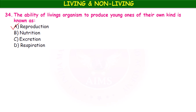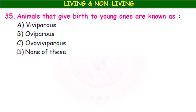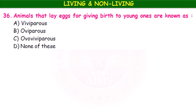The animals that give birth to young ones are known as viviparous. The animals that lay eggs are known as oviparous — examples include birds, insects, and reptiles. The ability of an organism to move from one place to another is called locomotion. Jumping, skating, and leaping are different types of movements.